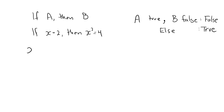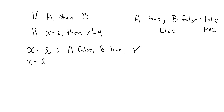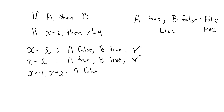For example, if x is equal to minus 2, then the hypothesis is false while the conclusion is true, making the implication true. If x is equal to 2, then the hypothesis as well as the conclusion is true, making the implication true. If x is any other number, then the hypothesis and the conclusion are both false, and the implication is true. Remember, it's only false if the hypothesis is true while the conclusion is false.